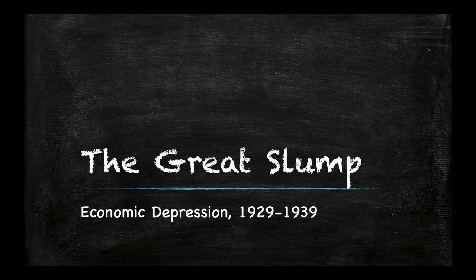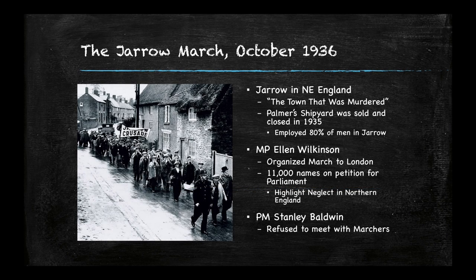If we look at England during the Great Depression — what we in the United States would call the Great Slump — this economic depression lasted about 10 years. It's no surprise, considering what you've read in class so far, that the northeastern part of the country, the old industrial mining part of the country, was considered pretty poor and pretty bad off. By looking at the film Love on the Dole and reading Orwell's The Road to Wigan Pier, that area around Manchester, Liverpool, and Leeds was pretty bad off.